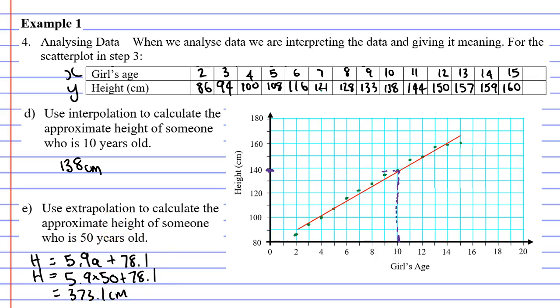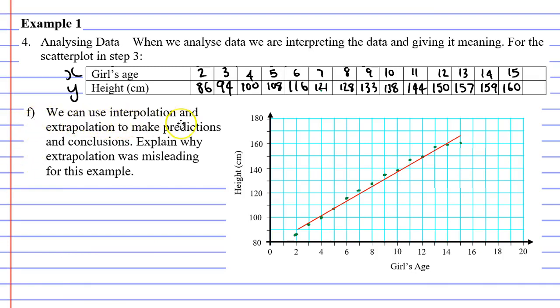This brings us to question F, which says we can use interpolation and extrapolation to make predictions and conclusions. Explain why extrapolation was misleading for this example. And the reason it's misleading is because when you use extrapolation, and let's look at our line of best fit, as we extend this line of best fit, and 50 is way over to the right, we can't even see where it goes, it's going to go up really high. And it gets up around 3.7 meters, or about 370 centimeters. So why is this an issue? Why has this happened?